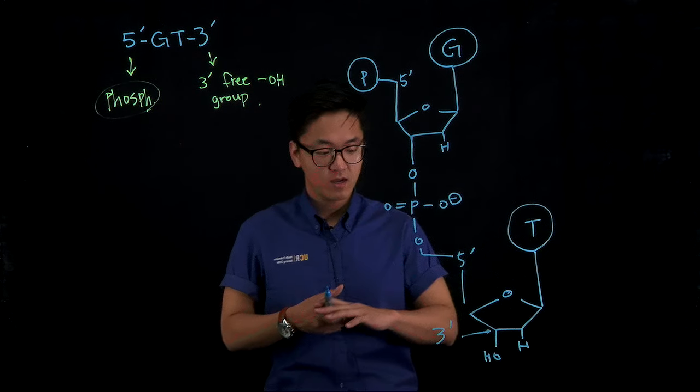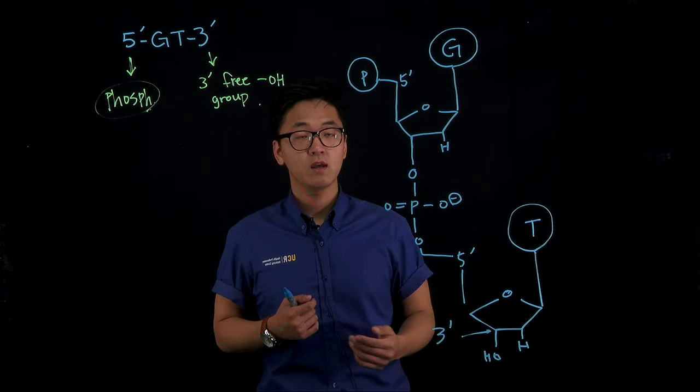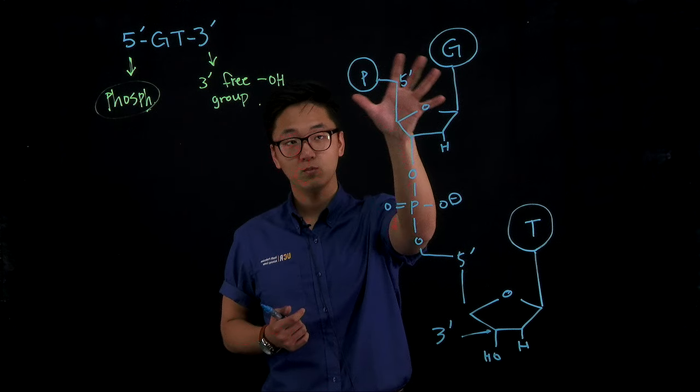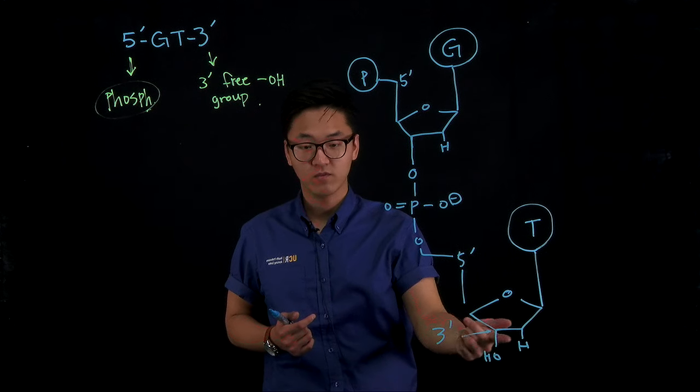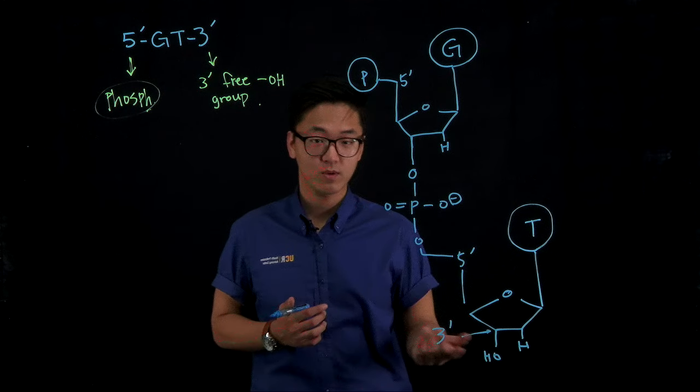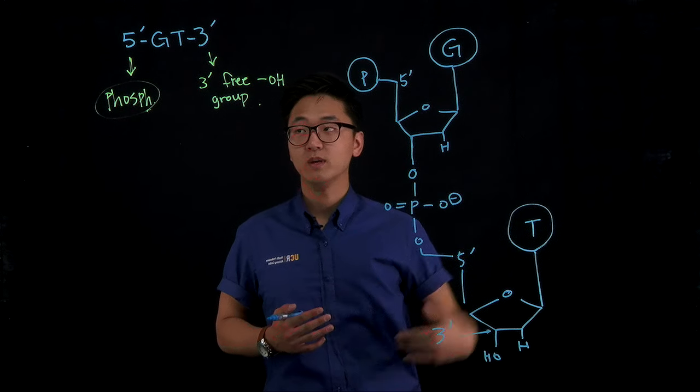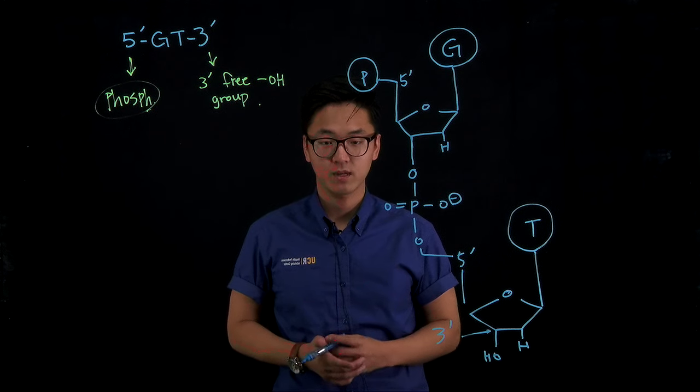So if you guys are given a diagram, it doesn't say which one is 5' end, which one is 3' end, but you guys do see that at one end you see a phosphorylated group, and at one end you see a free hydroxyl group, then you can tell which end is 5' end, which one is 3' end, and this is how you basically draw this 5' to 3' GT base DNA strand.